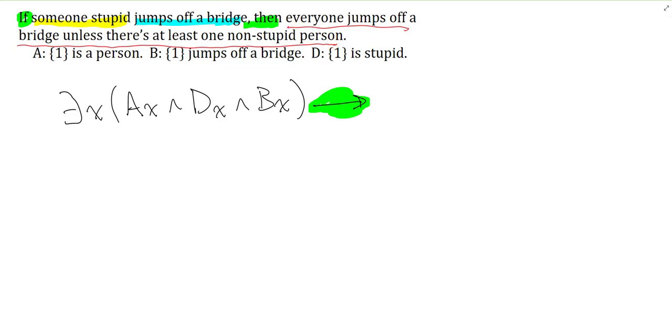Now I want to do the rest which is everyone jumps off a bridge unless there is at least one non-stupid person. The easiest way to do this is just to read the unless as being part of this. I know that there's two clauses here. The left unless is everyone jumps off a bridge and the right part is there's at least one non-stupid person. Everyone jumps off a bridge, that's a canonical form of the universal. Everyone is just people. I'll say then everyone.